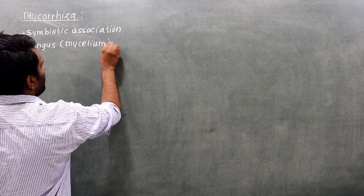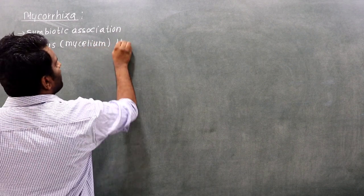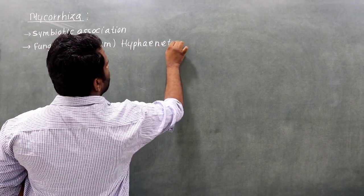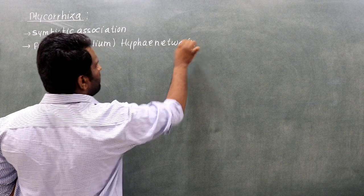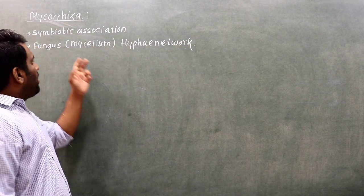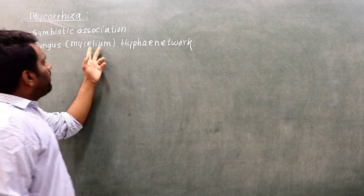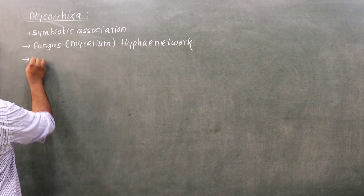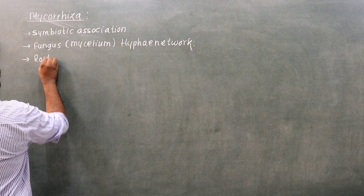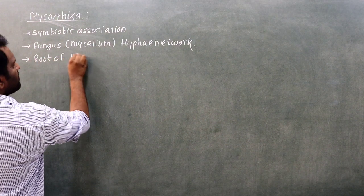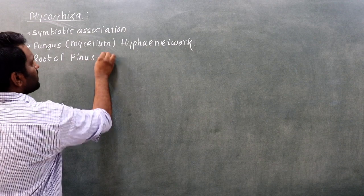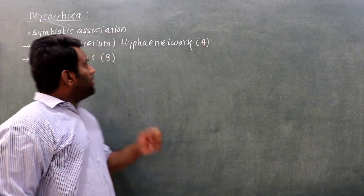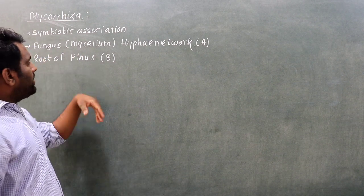Mycelium is actually a hypha network. As we know from biological classification, what do we mean by hypha? Actually, mycelium is the network of hypha. And the plant has the root of Pinus. This is the root of Pinus. There are two organisms - organism A is the fungus, the mycelium hypha, and organism B is the root of Pinus.